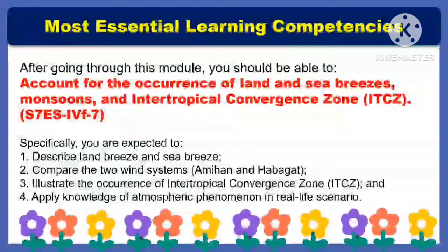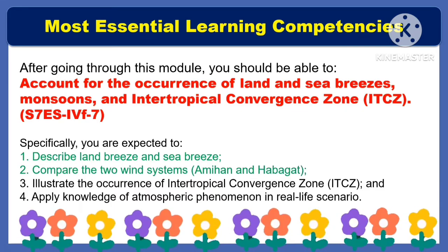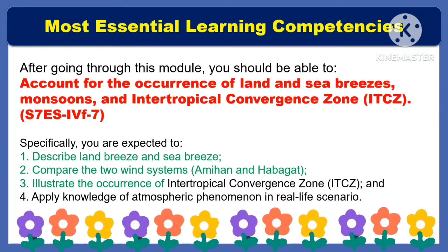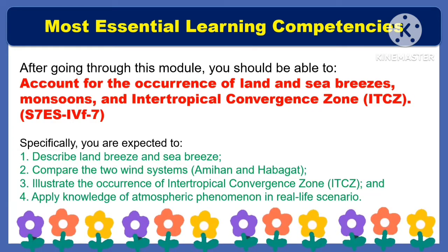For the most essential learning competencies, after going through this lesson, you should be able to account for the occurrence of land and sea breezes, monsoons, and the Intertropical Convergence Zone or ITCZ. Specifically, you are expected to describe land breeze and sea breeze, compare the two wind systems the Amihan and the Habagat, and illustrate the occurrence of the ITCZ and apply knowledge of atmospheric phenomena in real-life scenarios.